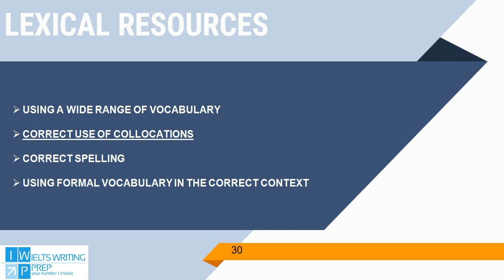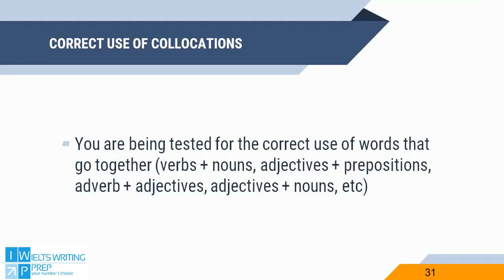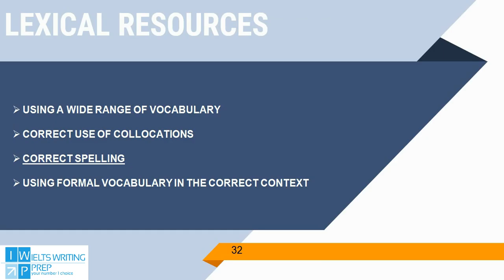Then we have the correct use of collocations — words that go together: verbs and nouns, adjectives and prepositions, adverbs and adjectives, adjectives and nouns, and so on.